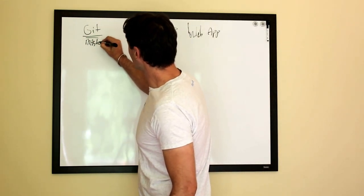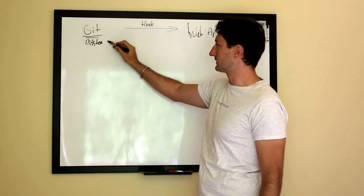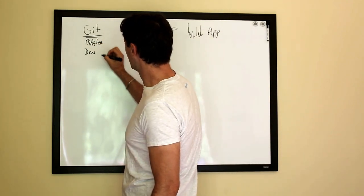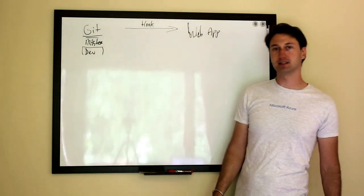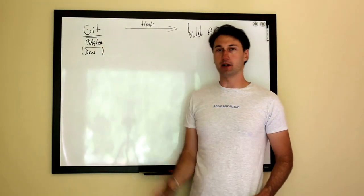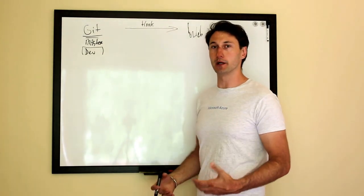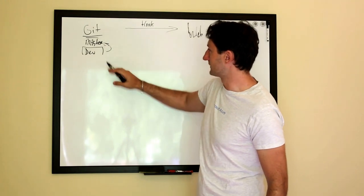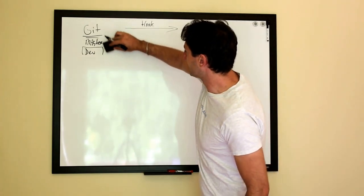What we were able to do is, because the web application was looking at master, later we added a dev branch. This would keep us padded from master and slow down our deployments in a lot of cases, but it was slowness that we wanted. When we were ready, we would merge to master, and that would kick off the web deploy. That gave us the padding that we wanted.